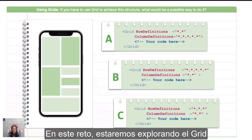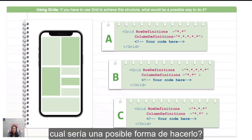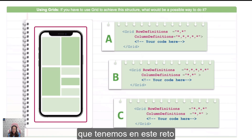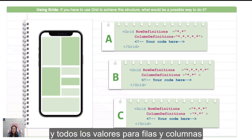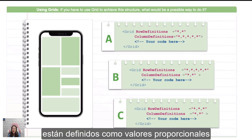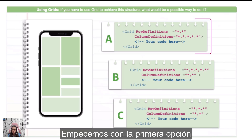For this challenge, we will be exploring the grid. If you have to use a grid to achieve this structure, what would be a possible way to do it? Pay attention to the image that we have in this challenge and let's start analyzing all the possible answers. But first of all, note that in each one of them, you have a grid declared and all the values for rows and columns are defined as a proportional value. So let's start with the first option.